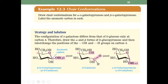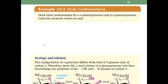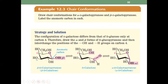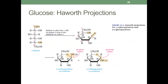I will give the chair conformation for glucose as an assignment. It is already done here for glucose. You will draw the Haworth projection and the chair projection of alpha-D and beta-D glucopyranose. So there are two problems — I'll post that.